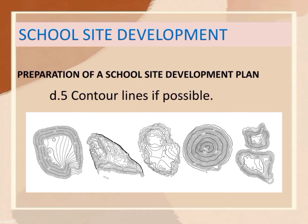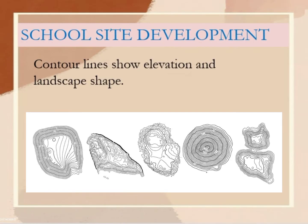Use contour lines if possible. These are lines on the plan that represent those points that have the same height or altitude. Contour lines show elevation and the landscape shape. They are useful because they illustrate the shape of the land's surface.